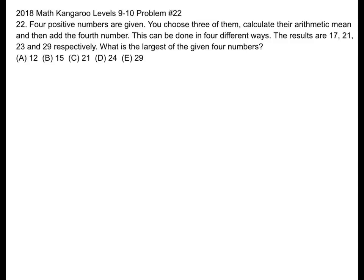This is the 2018 Math Kangaroo Levels 9-10, problem number 22. Four positive numbers are given. You choose three of them, calculate their arithmetic mean, and then add the fourth number. This can be done in four different ways.